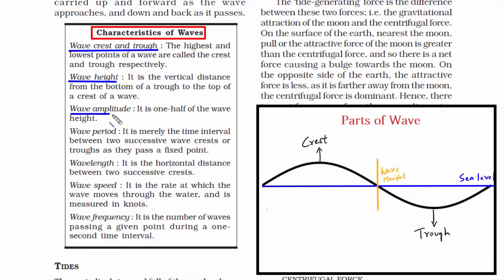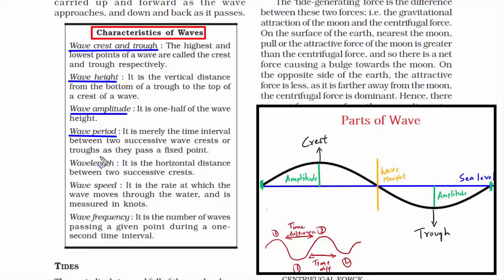Wave amplitude is one half of the wave height — from sea level to the crest, but also the depth from sea level to the trough. So wave amplitude is both upward and downward. Wave period is the time interval between two successive wave crests or troughs as they pass a fixed point — in simple words, how much time a wave takes to form the second crest or trough.